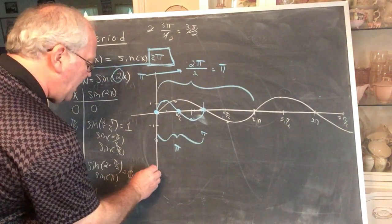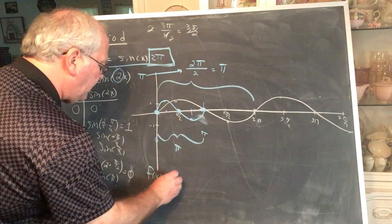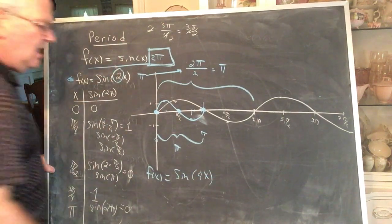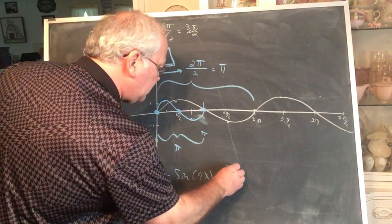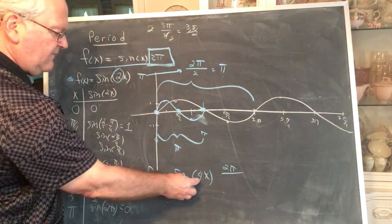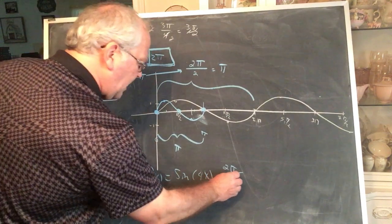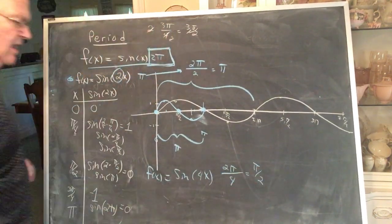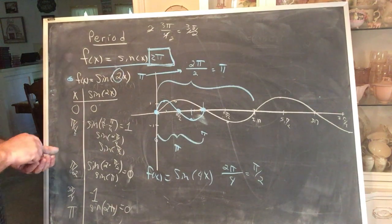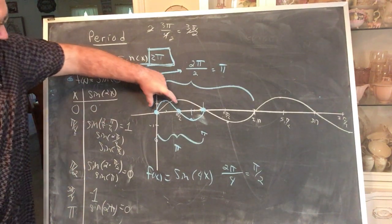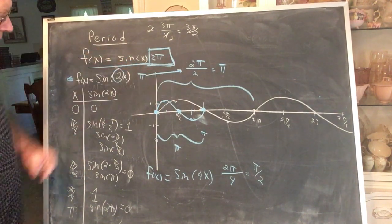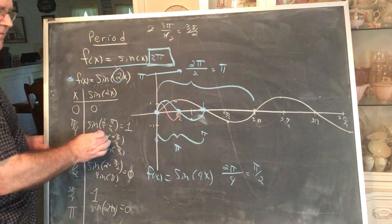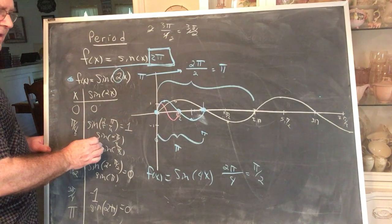Similarly, if we had f of x, if we had sine of, let's say, 4x, what is the period? Well, of sine itself, it's 2π, but we divide by this coefficient on the inside. That simplifies to π over 2. This curve would have to go through one complete cycle between 0 and π over 2. Is it clear? That would be a very tightly squeezed curve.